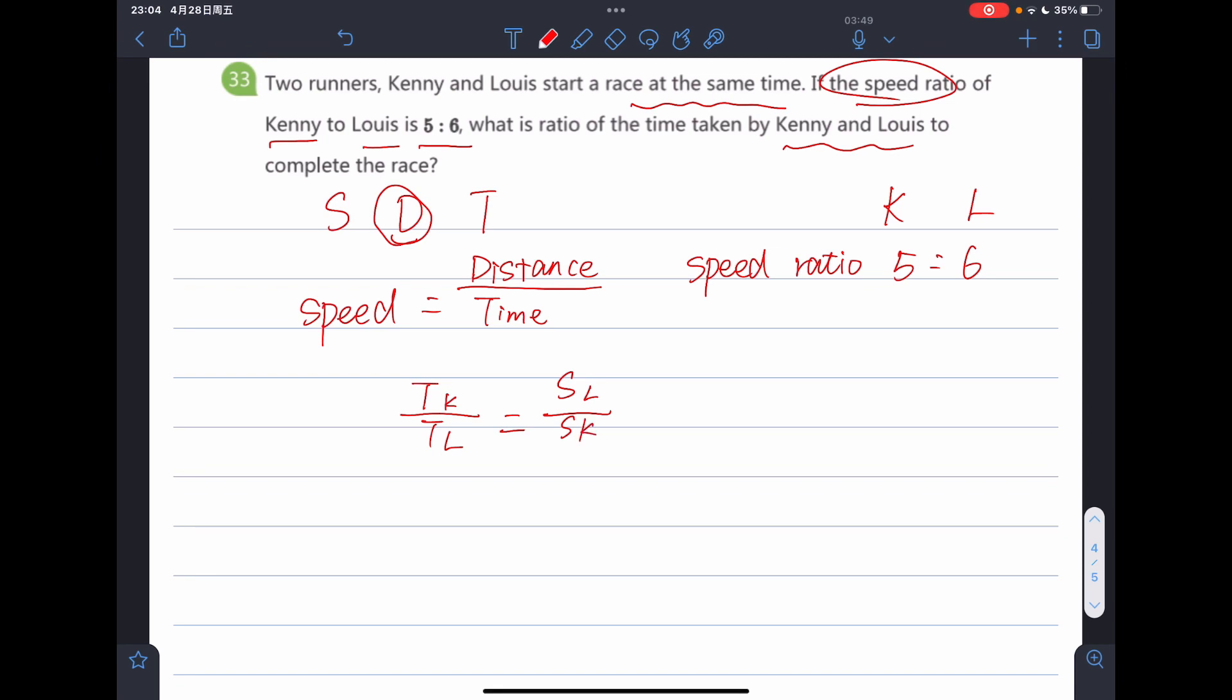So the speed ratio of Kenny to Luis is 5 to 6. Therefore, the ratio of the time taken by Kenny and Luis is inversely proportional to their speeds. That is 6 to 5, right? And there's the answer.